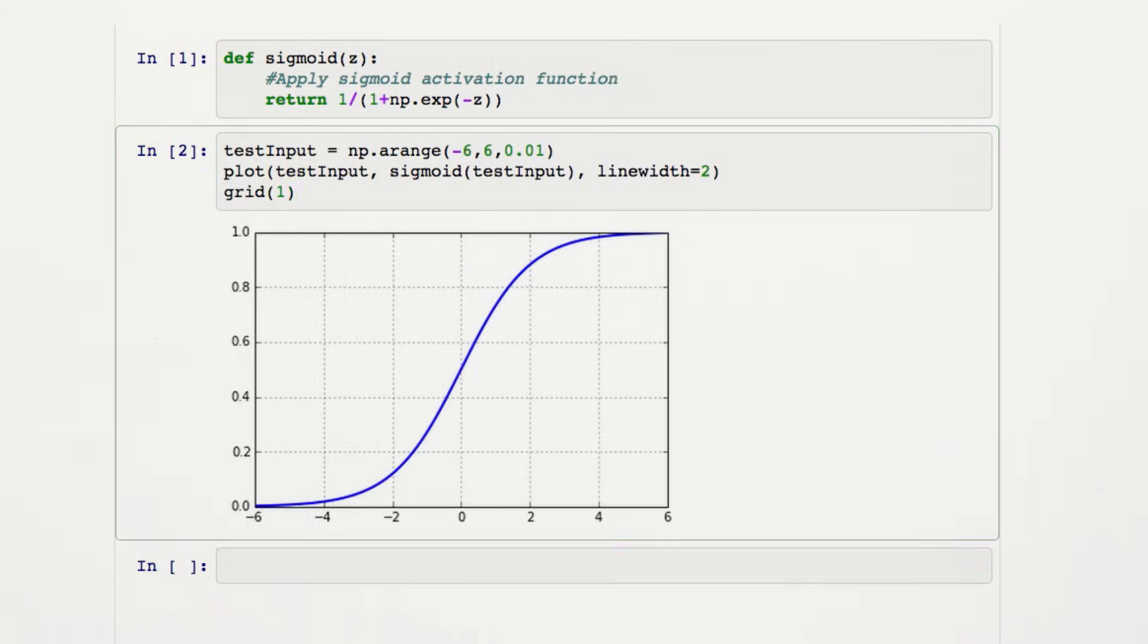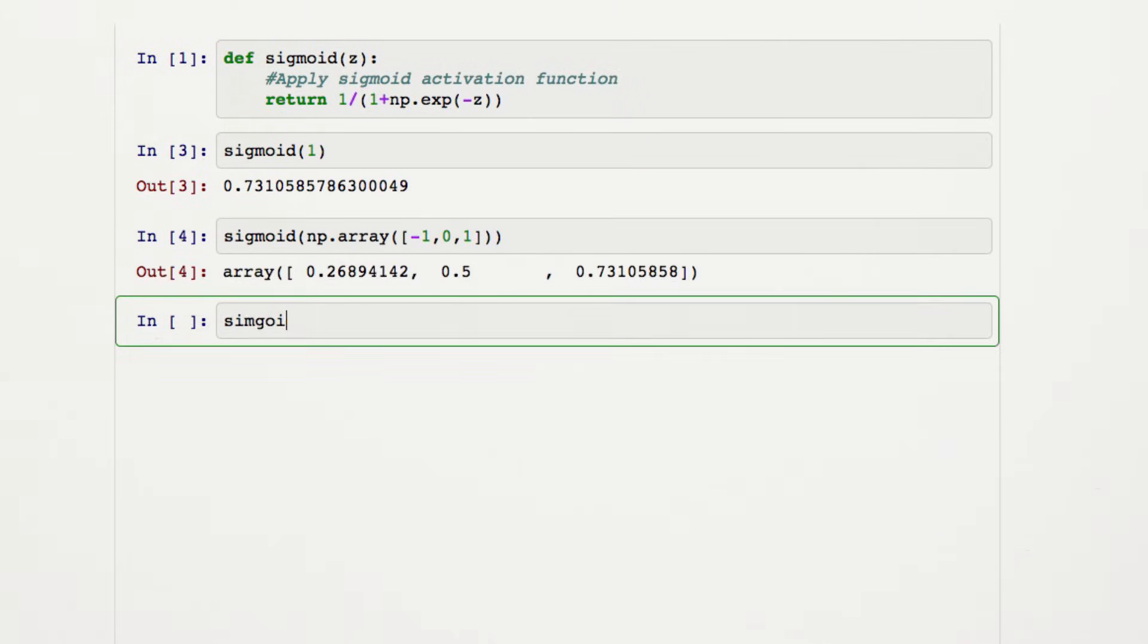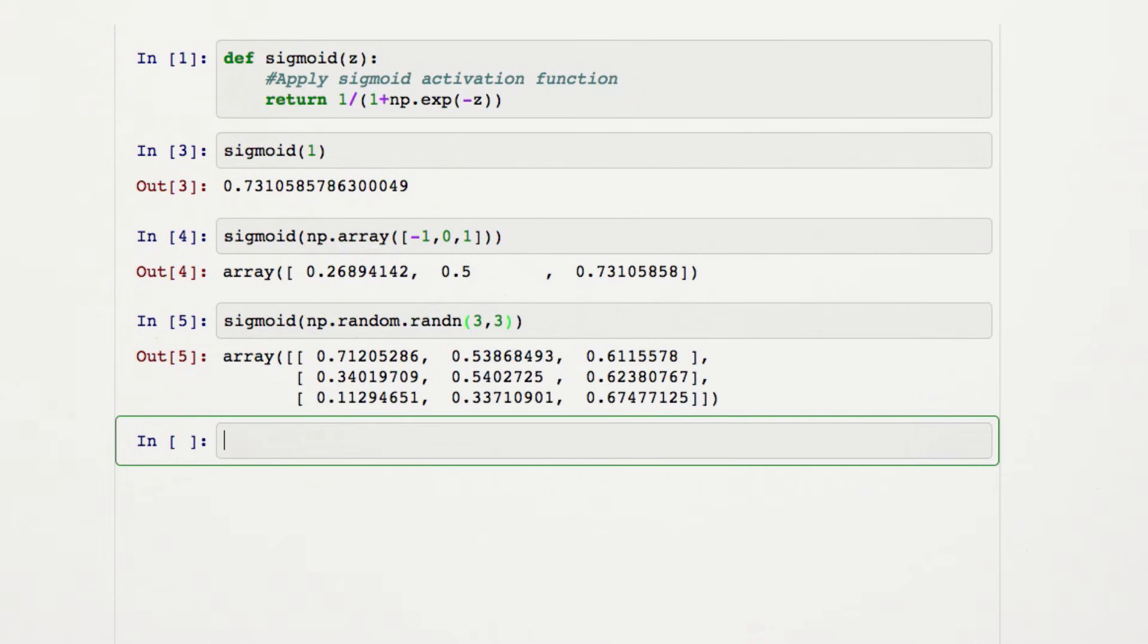Using NumPy is really nice here, because we can pass in a scalar, vector, or matrix. NumPy will apply the activation function element-wise, and return a result of the same dimension as it was given.